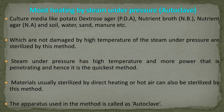Moist heat sterilization — steam under pressure — is called the autoclave. Culture media like PDA (potato dextrose agar), NB (nutrient broth), NA (nutrient agar), and also soil, water, sand, manure, etc., can all be sterilized in the steam under pressure method in the autoclave. Steam under pressure has high temperature and more penetrating power, hence it is the quickest method. The principle of autoclave: water is heated to generate steam which collects in a closed chamber, raising the temperature to corresponding pressures — 5 PSI, 10 PSI, 15 PSI, and 30 PSI. The main principle is 121 degrees Celsius at 15 PSI.